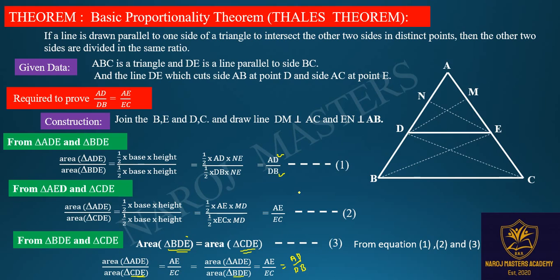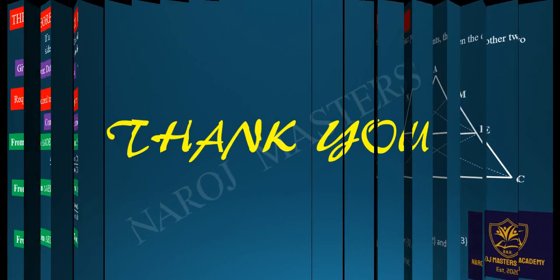From these three equations, we get that AE by EC is equal to AD by DB. So from this, AD divided by DB is equal to AE divided by EC — hence it is proved. Thank you.